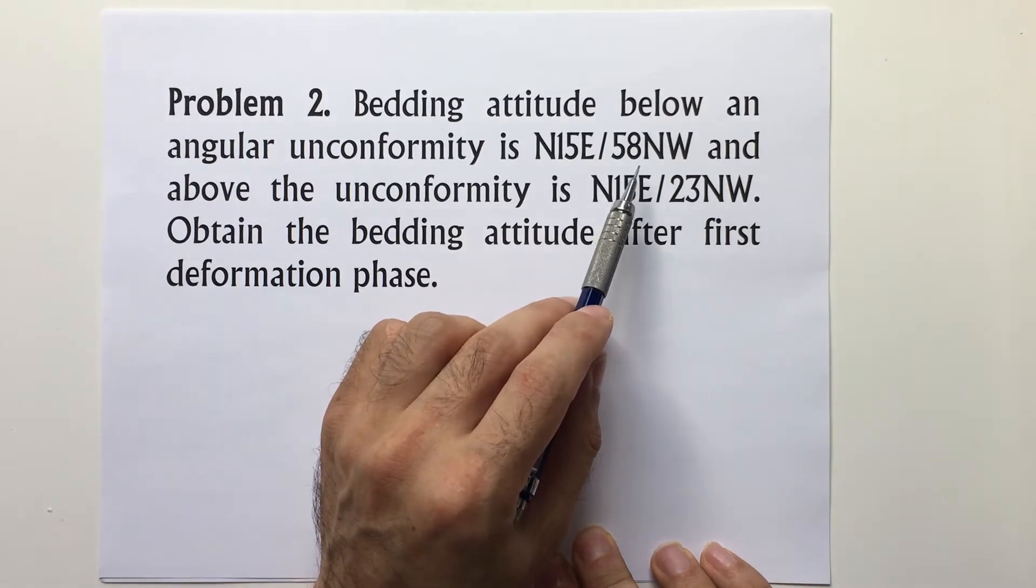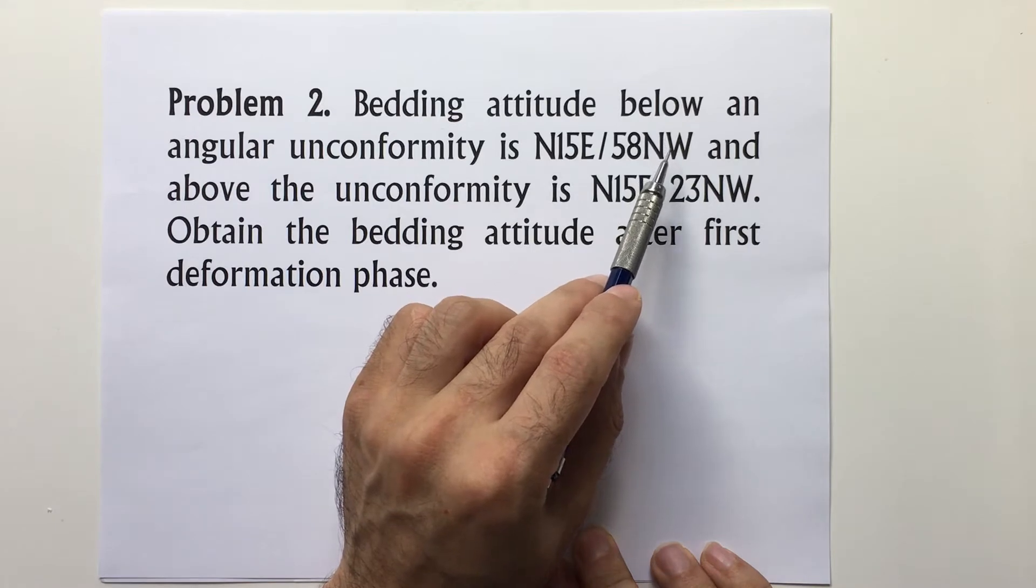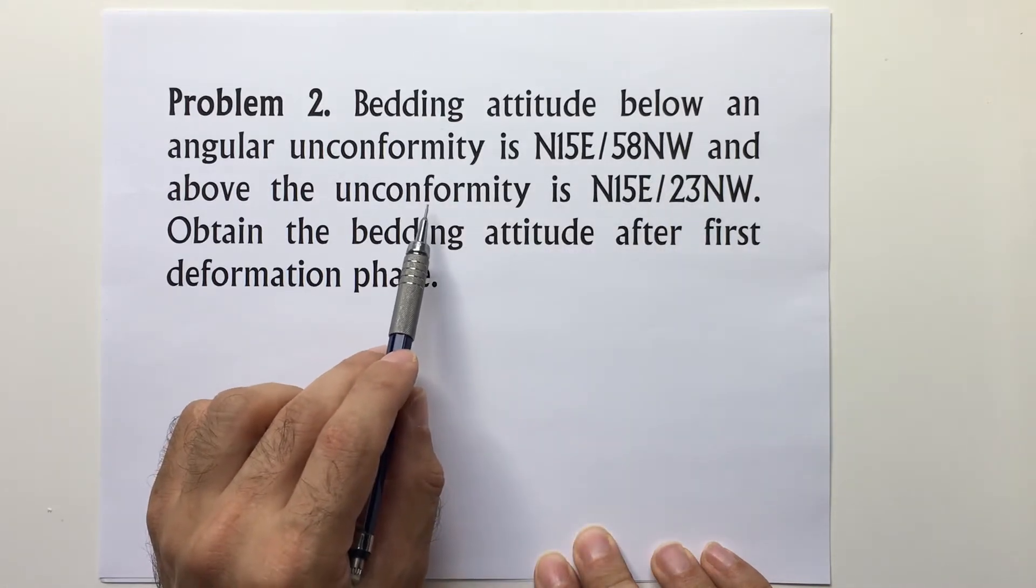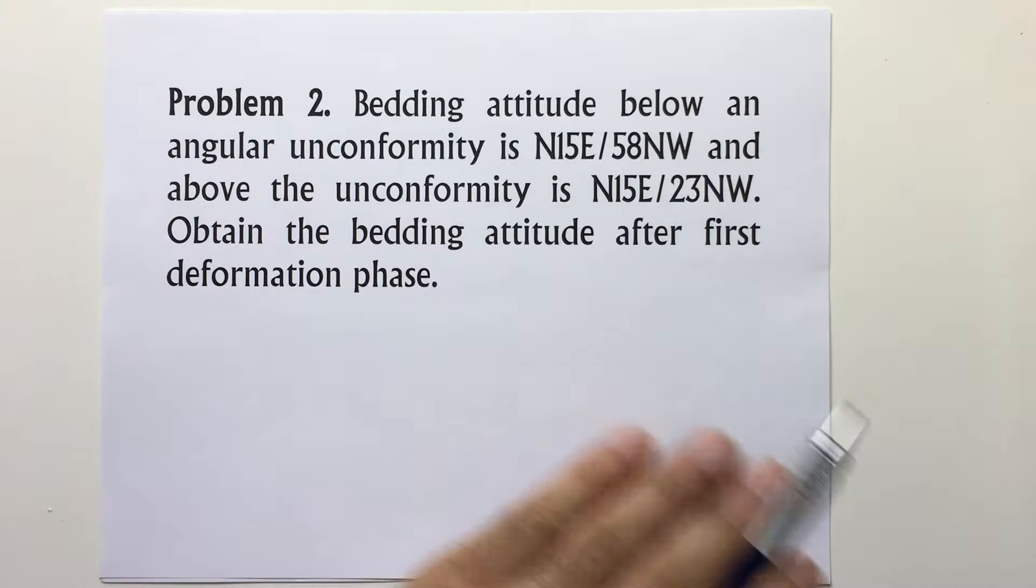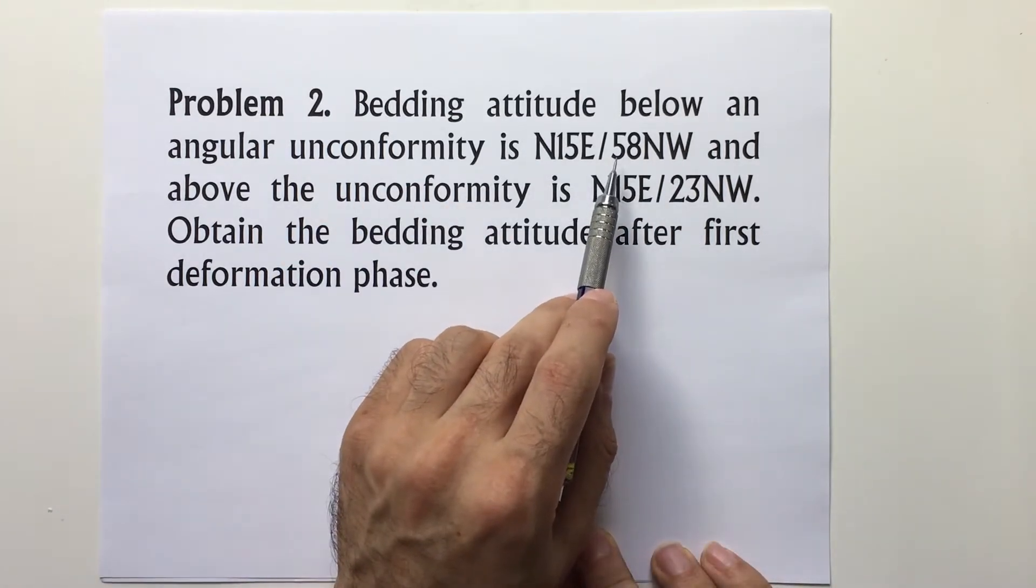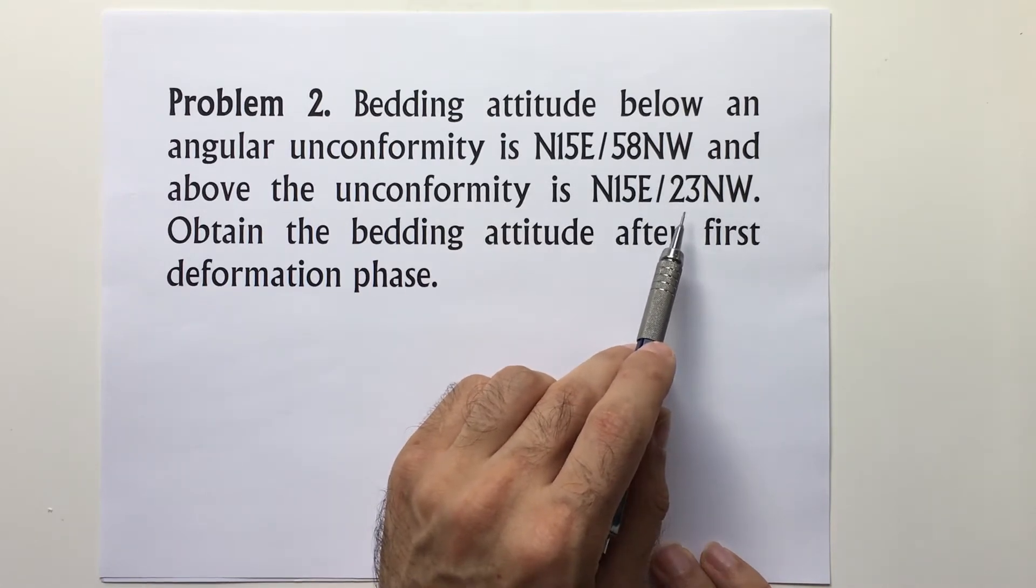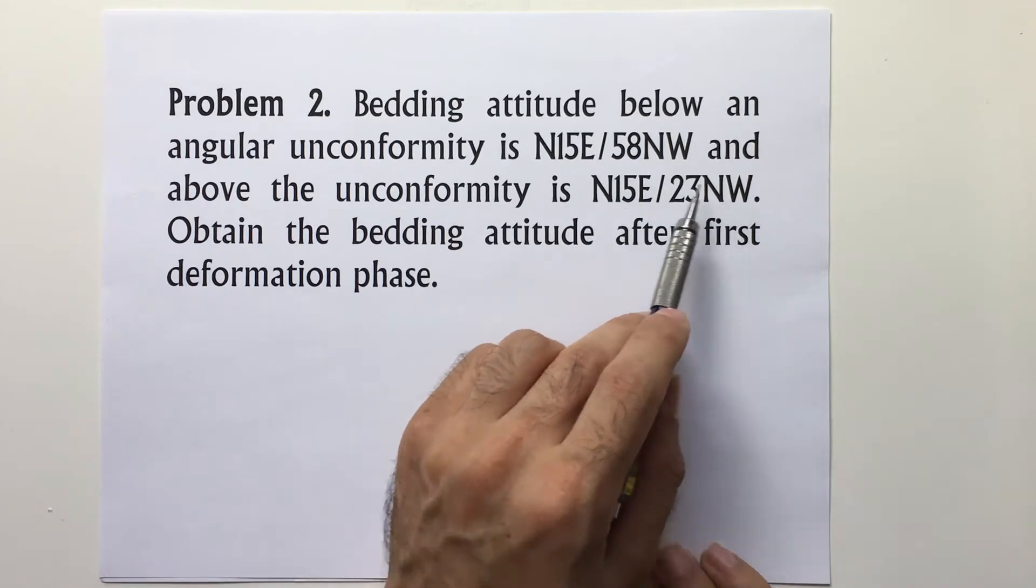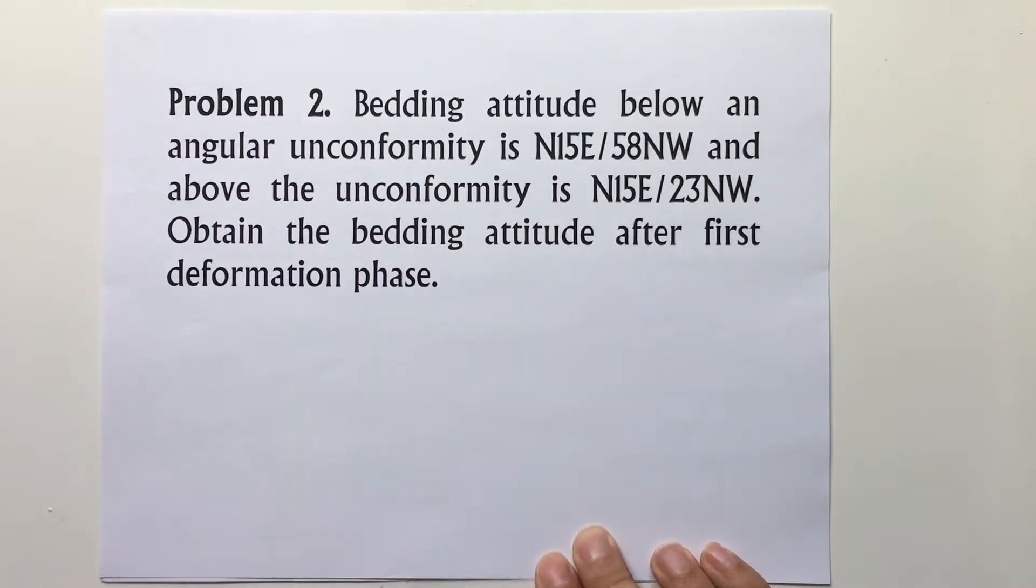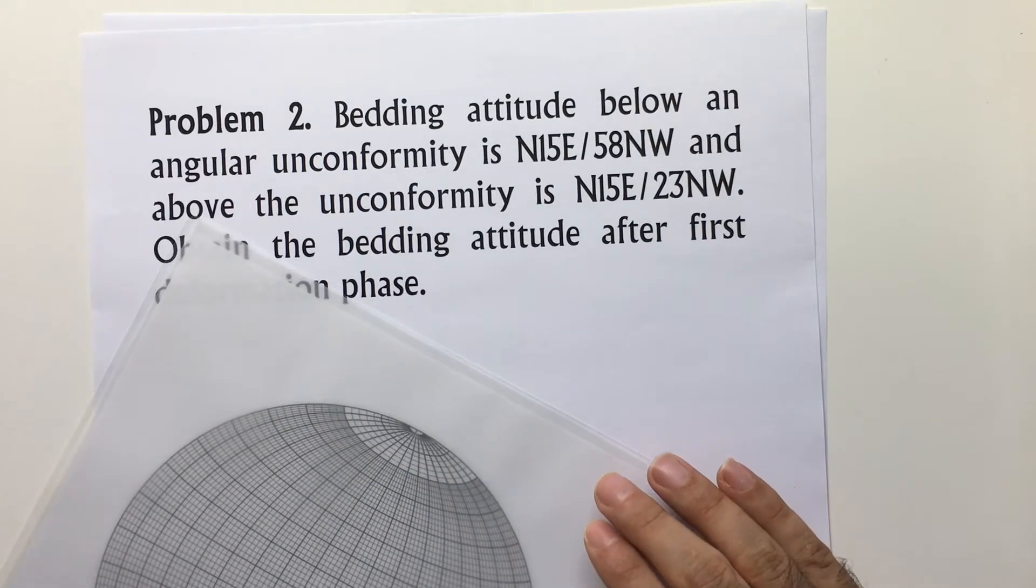This first tectonic phase tilted the bedding, then there is an unconformity with flat layers deposited on top of that. Then, due to the second phase of tectonics, it gained a little strike and dip. So what we're going to do is remove this effect from this one.